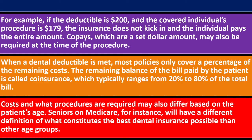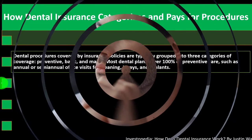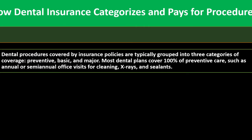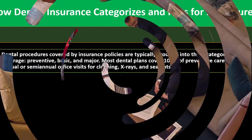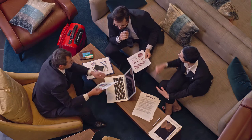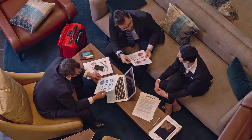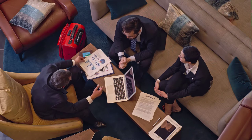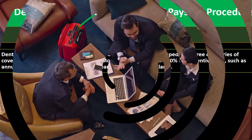Costs and what procedures are covered may also differ based on the patient's age. Seniors on Medicare will have a different definition of what constitutes the best dental insurance than other age groups. Dental procedures covered by insurance policies are typically grouped into three categories: preventative, basic, and major. As with medical coverage, there are incentives to get preventative care done, with the argument being that it can lower long-term health costs.